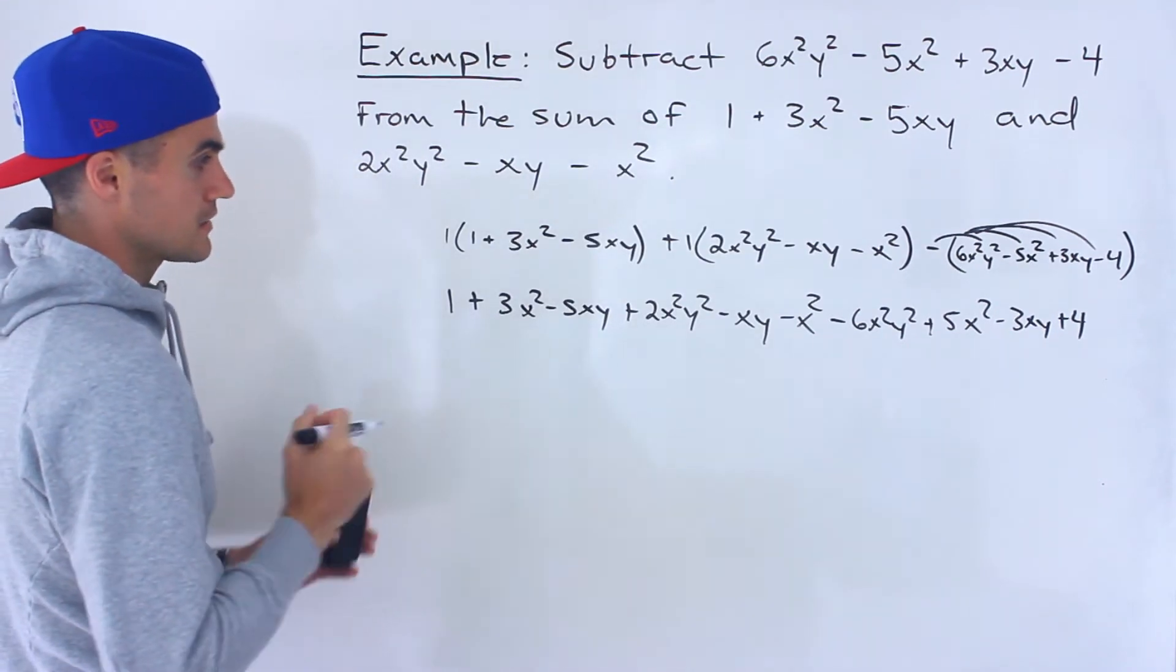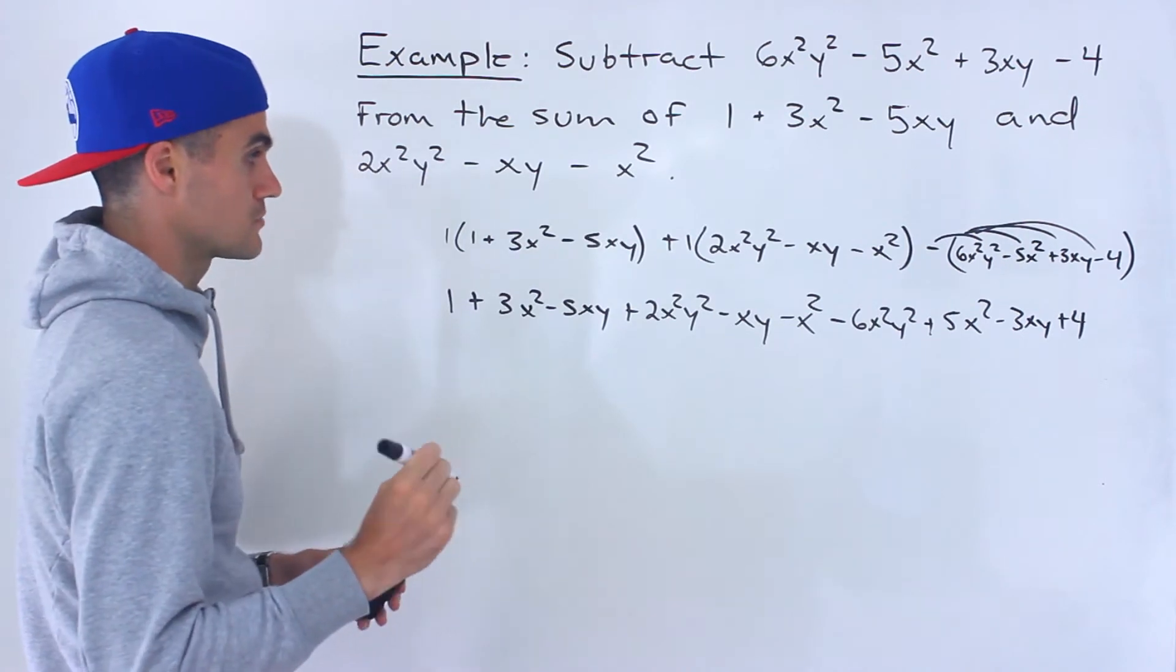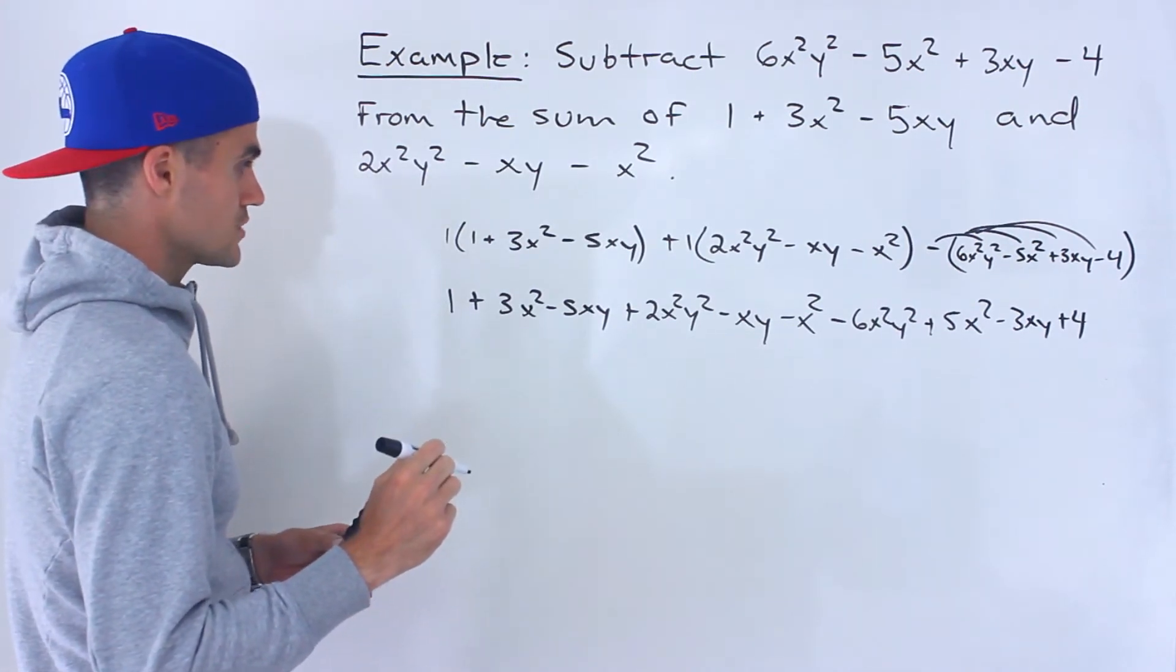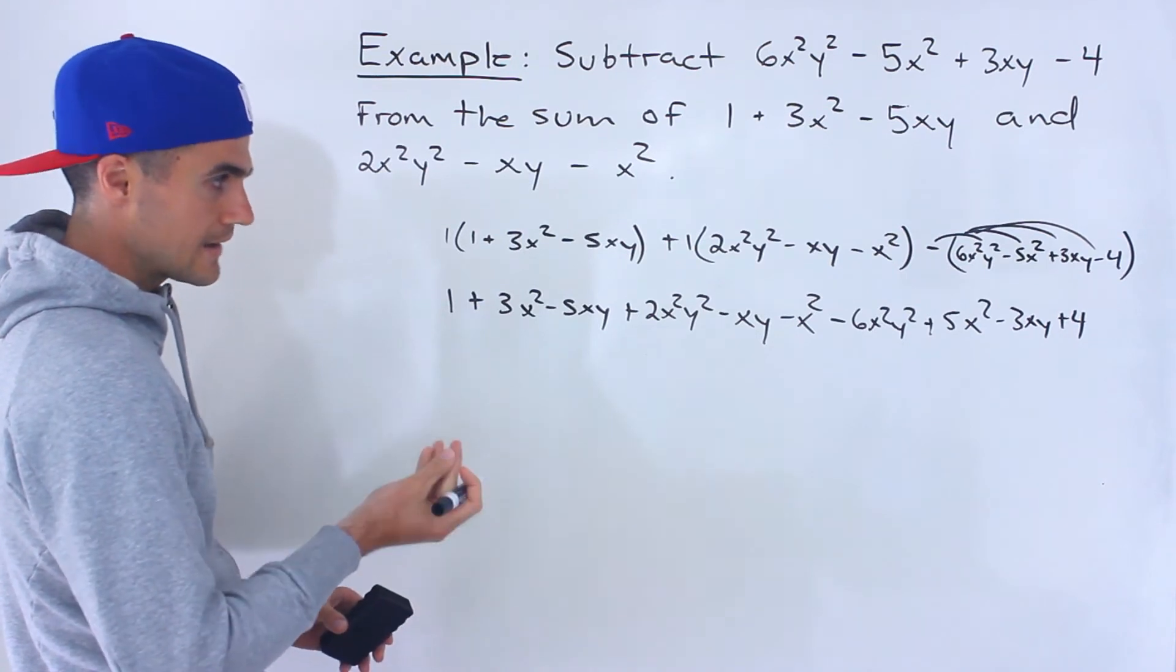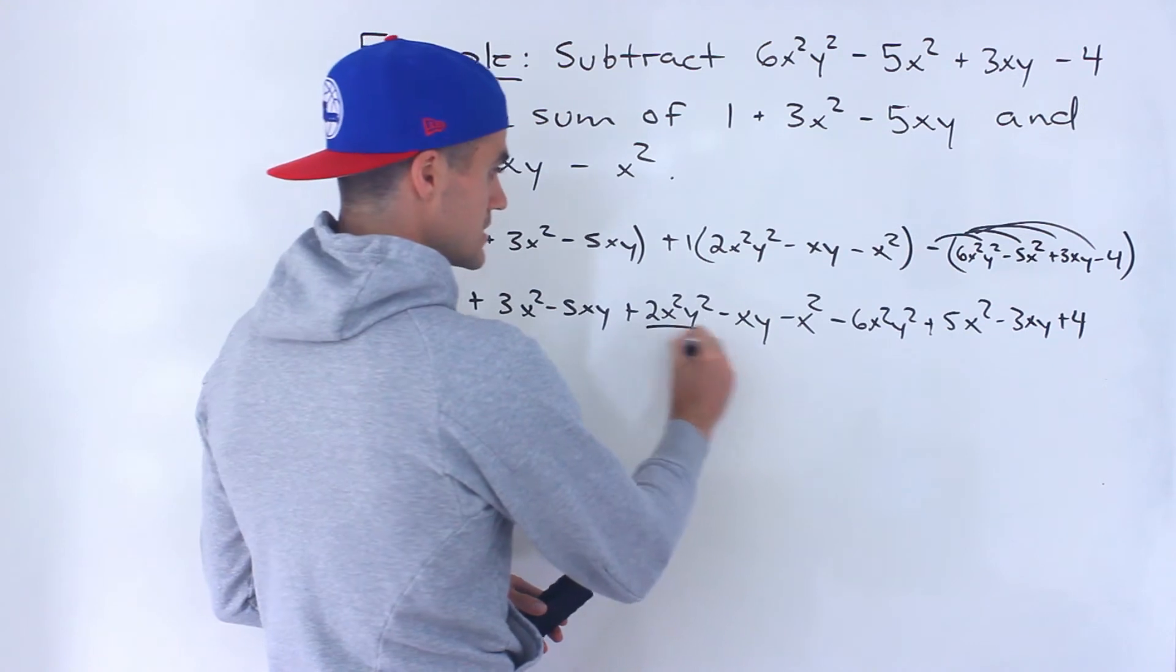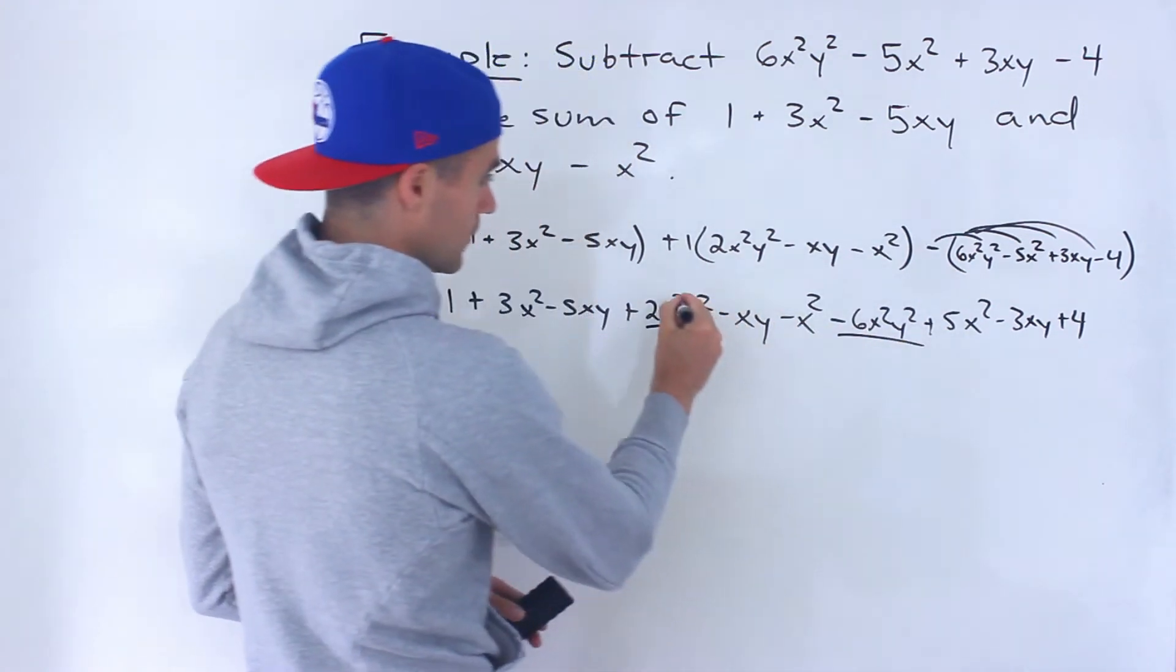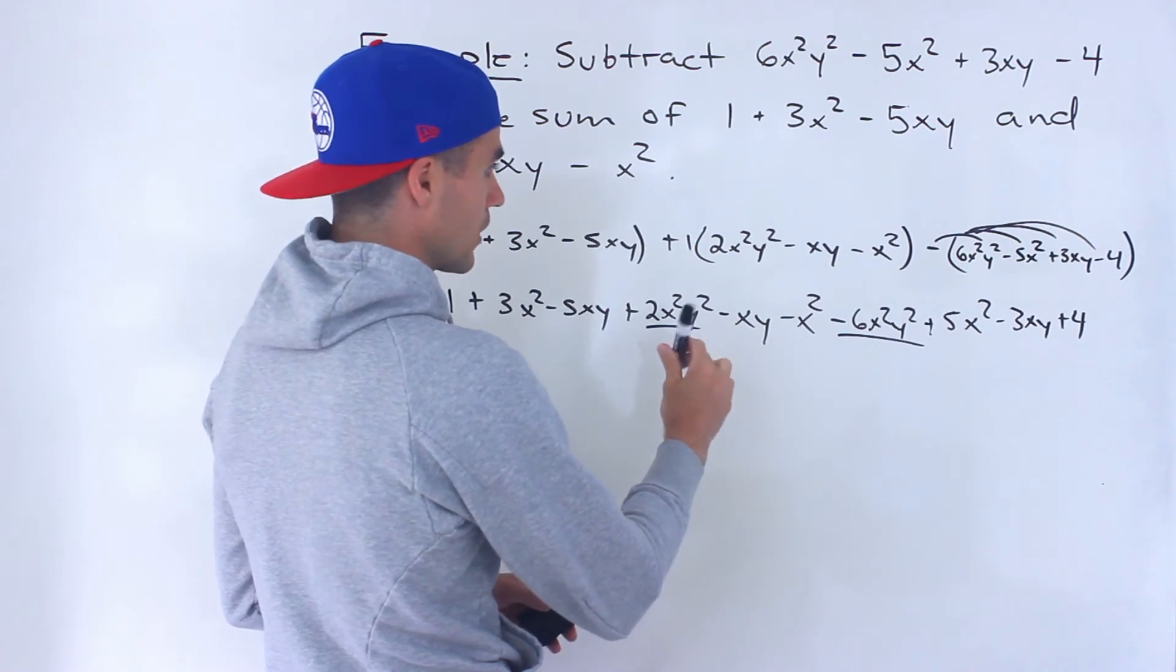And then from here, basically what it's about is collecting and simplifying like terms. So the first set I'm going to deal with is the one with the highest degree. So notice that the highest degree expressions is this one and then this one. The degree is 4 of those. You don't necessarily have to go in that order. That's the order I'm going to go in.